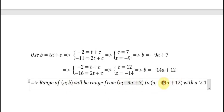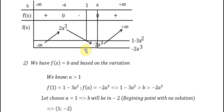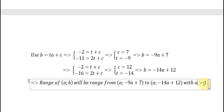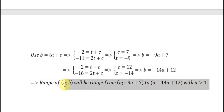So we can find the range is from b equal to minus 9a plus 7 to b equal to minus 14a plus 12. This means the valid region is a small area within these bounds, with the condition that a should be greater than 1. That is the answer for question number 2. That is the end.